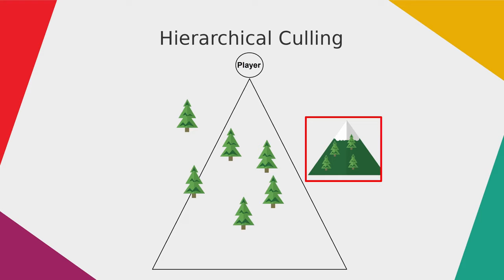In this example we have a big bounding volume around a large mountain with 4 trees on it. Since it's outside of the view frustum, it only needed to check if the mountain is inside or outside. If the mountain is completely outside, it doesn't need to check all the trees on the mountain — just one check and that's it.